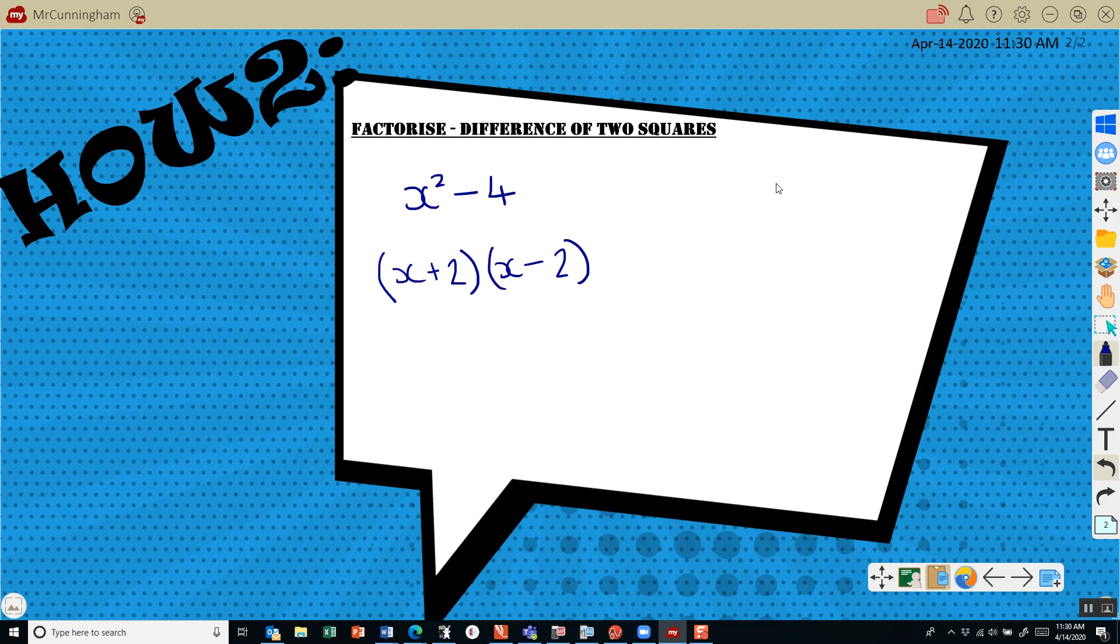Let's do another one that says 16y squared minus 81. Is this a square number? 16 is a square, we've got y squared which is a square, 81 is a square number, and we're finding the difference. We're subtracting.